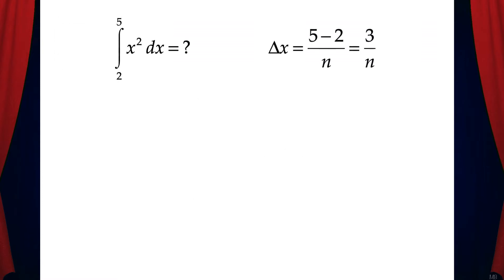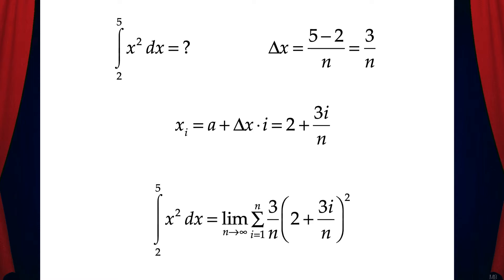The first thing we'll do is find delta x, which in this case is 5 minus 2 over n, which equals 3 over n. Then we'll find x sub i, which is a plus delta x times i, giving us 2 plus 3i over n. Now we can write the final answer: the integral from 2 to 5 of x squared dx equals the limit as n goes to infinity of the sum where i goes from 1 to n of 3 over n times the quantity of 2 plus 3i over n, squared. Here 3 over n is delta x and the quantity of 2 plus 3i over n, squared, is f of x sub i.